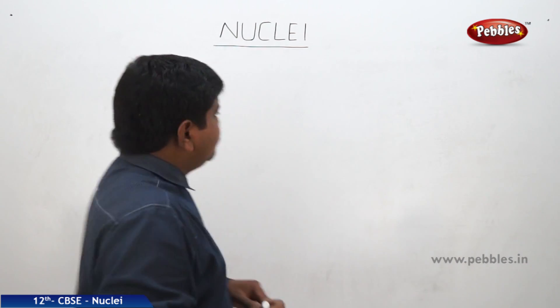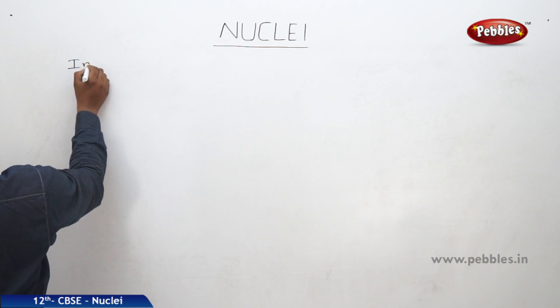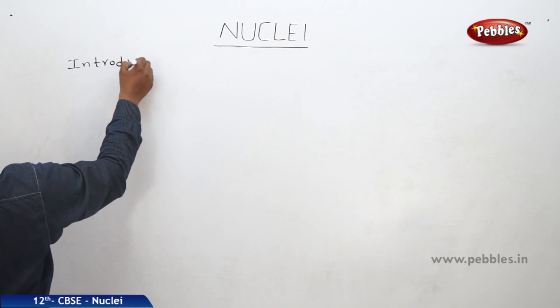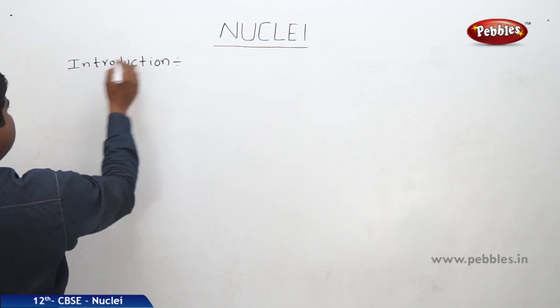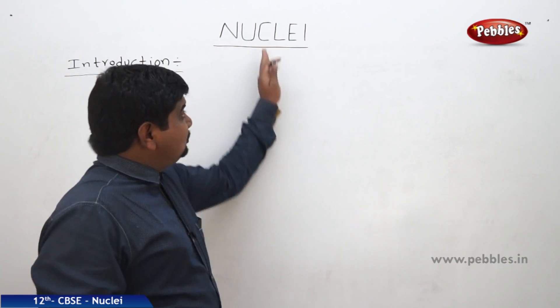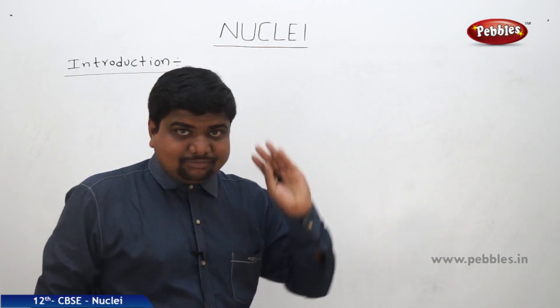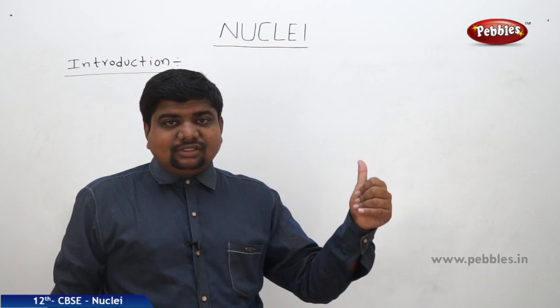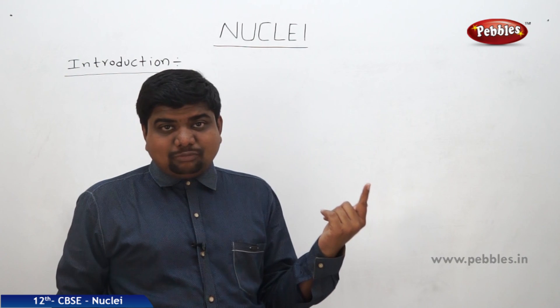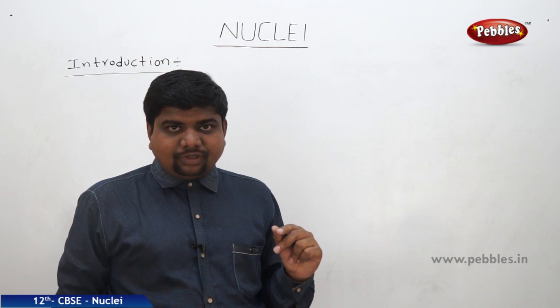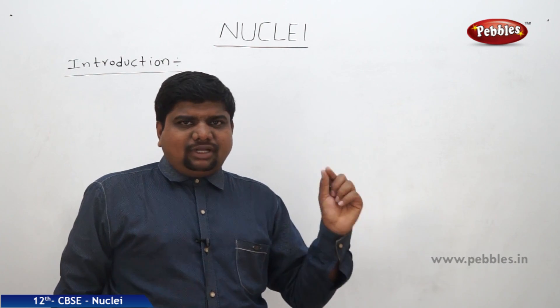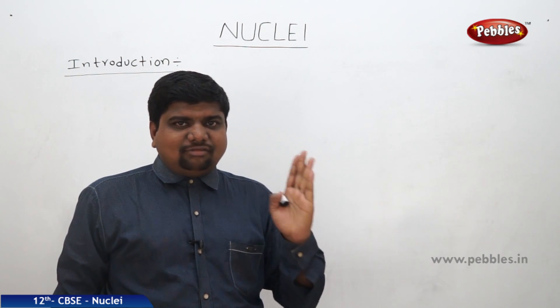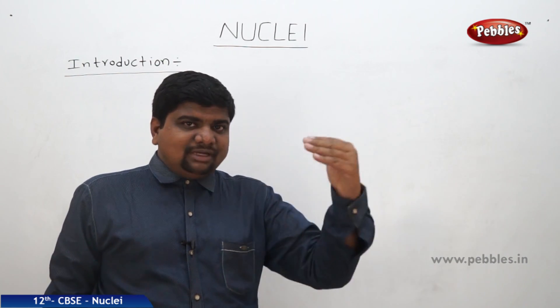We are going to discuss about the nucleus of the atomic structure. The introduction about the nucleus was already given in the chapter atoms. There are many different atomic models: JJ Thomson's model, Rutherford's alpha scattering model, and Bohr's model of hydrogen atom. Every model described by the different scientists is valid up to some extent, and they also have some limitations.